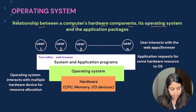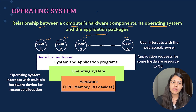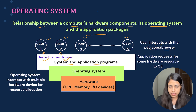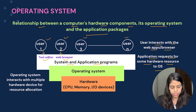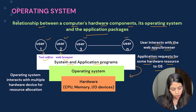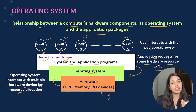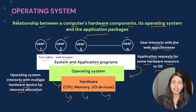What is the relationship between computer hardware, the operating system, and application packages? Multiple users want to execute tasks, so they interact with web apps or browsers — the system and application programs. One user might be saving a document in a text editor, another might be searching in a web browser. These applications request hardware resources from the operating system. All of them need hardware resources to perform tasks efficiently, so application or system programs go to the operating system and request resources. The operating system then interacts with multiple hardware devices — CPU, memory, and input/output devices — for resource allocation.